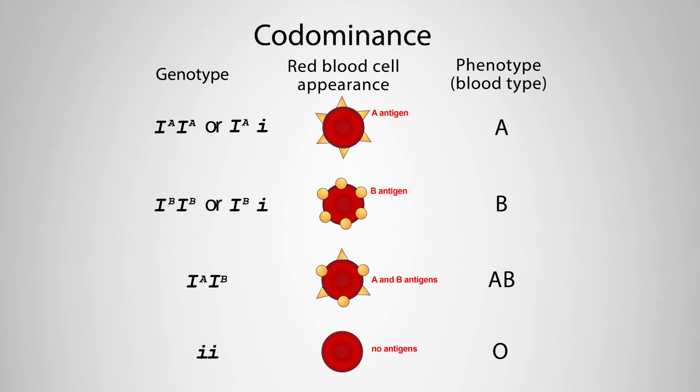Finally, individuals with two little i alleles do not express any antigens on their red blood cells, and their blood type is O.